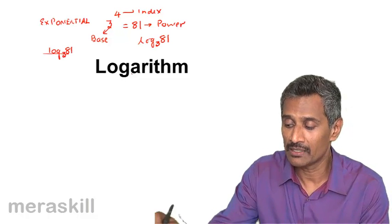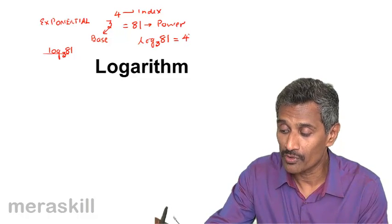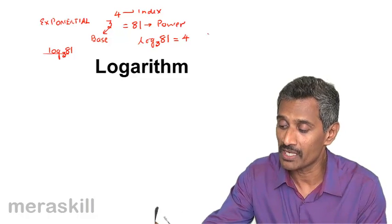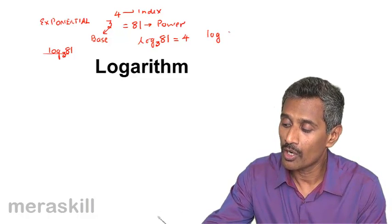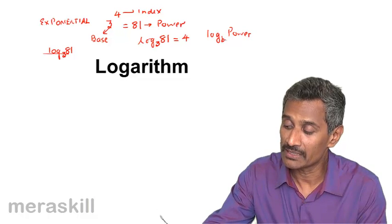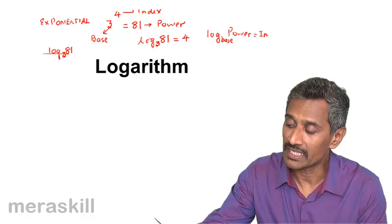This equals 4, which means 3 raised to 4 is 81. So, log of the power to the base equals the index. The logarithm is nothing but the index.